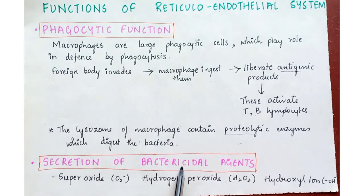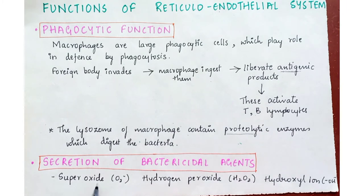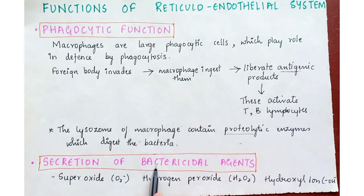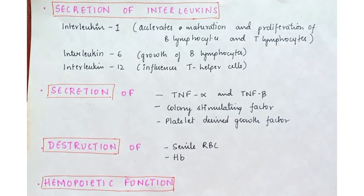The next function is the secretion of bactericidal agents — bactericidal meaning those that kill bacteria. Superoxide, hydrogen peroxide, and hydroxyl ions are some of the bactericidal agents secreted by macrophages. These cells secrete these agents which kill the bacteria.